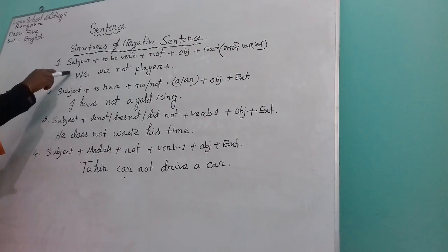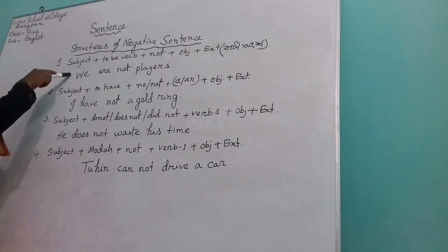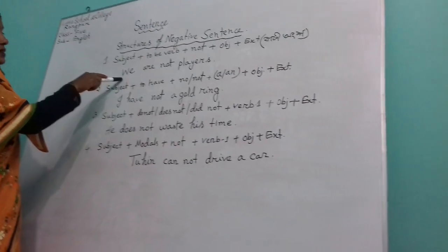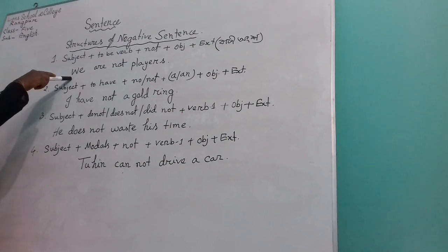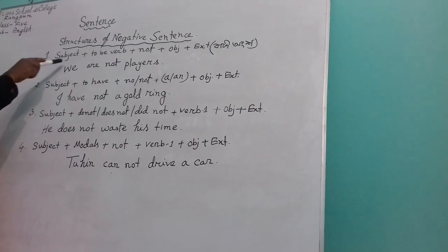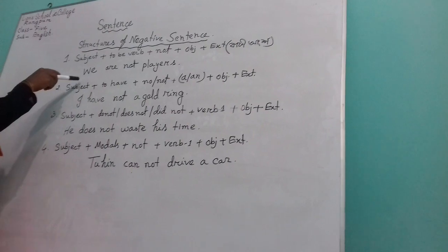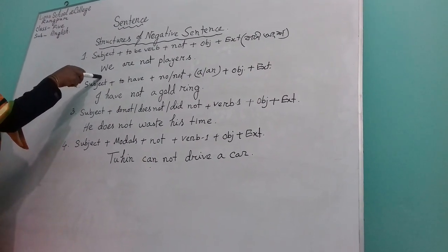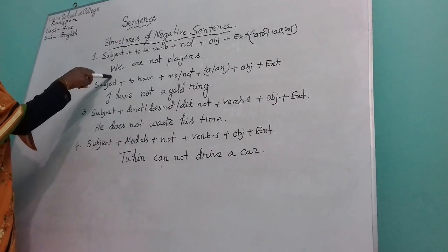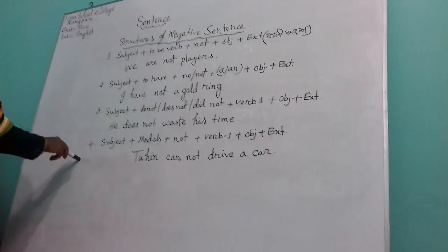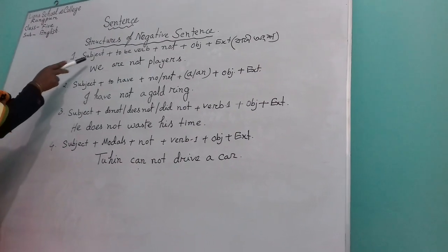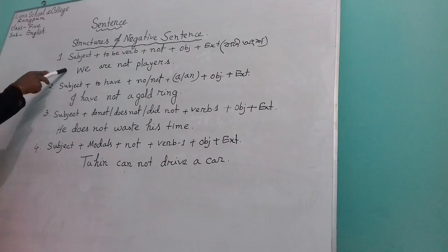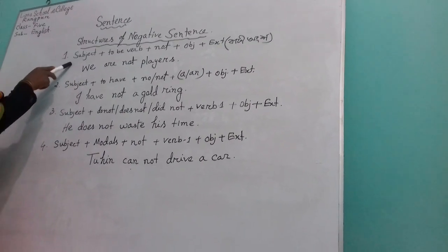Dear learners, here, one thing I can say — in my last class I taught you that there are many structures of negative sentences. For this, you have to learn auxiliary verbs. These are the structures of negative sentences and now we will know them one by one.